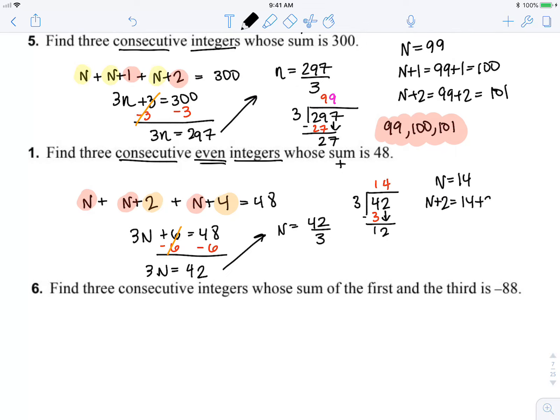Plus 2: 14 plus 2 which is 16, and n plus 4 is 14 plus 4 which is 18. So our three consecutive even integers are 14, 16, and 18.